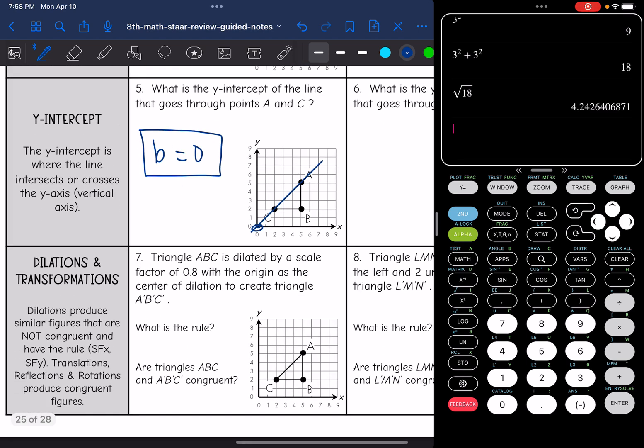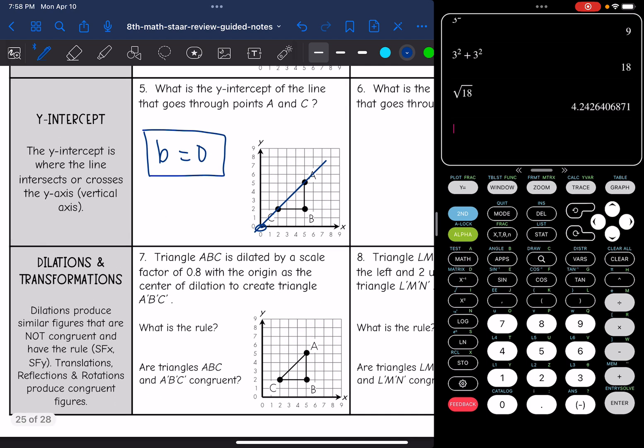They might also ask you about a dilation or a transformation. Remember, dilations produce similar figures that are not congruent, and they have the rules scale factor times x, scale factor times y. Translations, reflections, and rotations will produce congruent figures.